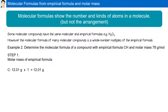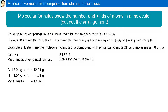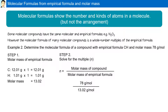The first step is to determine the molar mass of the empirical formula CH. Carbon: 1 atom, 12.01 grams. Hydrogen: 1 atom, 1.01 grams. The molar mass of CH is 13.02 grams. The second step is to solve for the multiple N. N equals the molar mass of the compound divided by the molar mass of the empirical formula: 78 grams per mole divided by 13.02, giving N equal to 6.